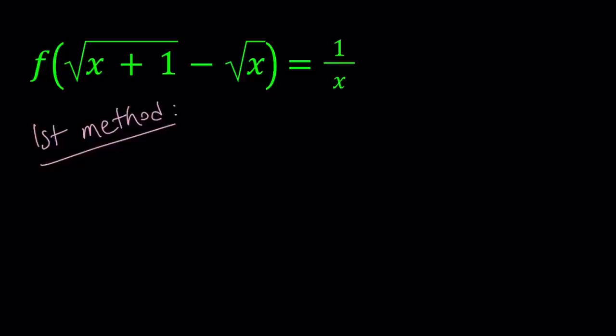For my first method, as well as for my second method, I'm going to set the expression inside the parentheses — the square root of x plus 1 minus the square root of x — equal to another variable. How about t?